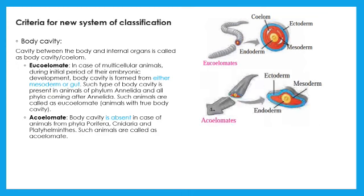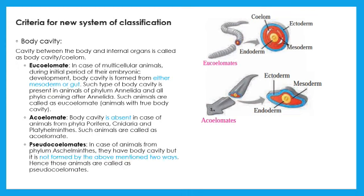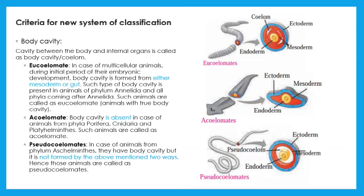In some animals, coelom is not formed from mesoderm or gut. But, it is formed from other tissues. They are called pseudocoelomates. For example, Aschelminthus.